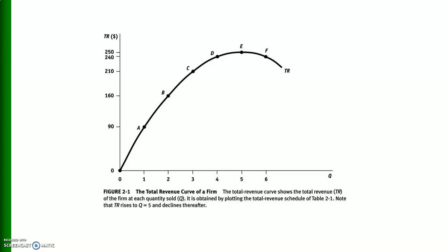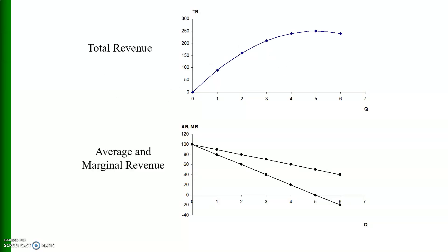This curve is increasing at a decreasing rate, which reaches its maximum at point E and then declines. The upper diagram shows the total revenue function, and the lower diagram shows average revenue and marginal revenue — this curve is average revenue and this curve is marginal revenue.